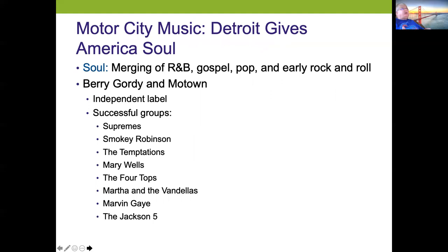The Motor City music was another cool thing in the mid-60s — Detroit gave us American soul music. Soul was the merging of rhythm, blues, gospel, pop and early rock and roll. Barry Gordy was one of the big producers with Motown Records in Detroit — an independent label. They had the Supremes, Smokey Robinson, The Temptations, Mary Wells, The Four Tops, Martha and the Vandellas, Marvin Gaye, and The Jackson Five. Michael Jackson basically got his start there. It was an interesting time with both rock and soul competing.